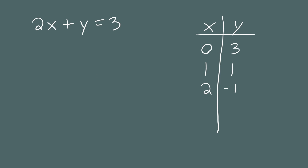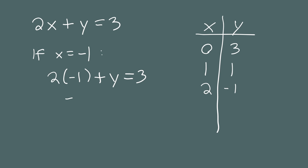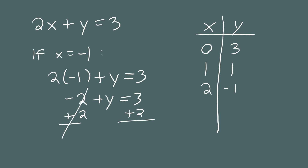Just to mix things up a bit, what if we pick a negative number for x? Let's say what happens if we pick negative 1 for x. We plug this in: 2 times negative 1 plus y is equal to 3, or negative 2 plus y equals 3. We add 2 to both sides, giving us y is equal to 5. So if x is equal to negative 1, then y is equal to 5.